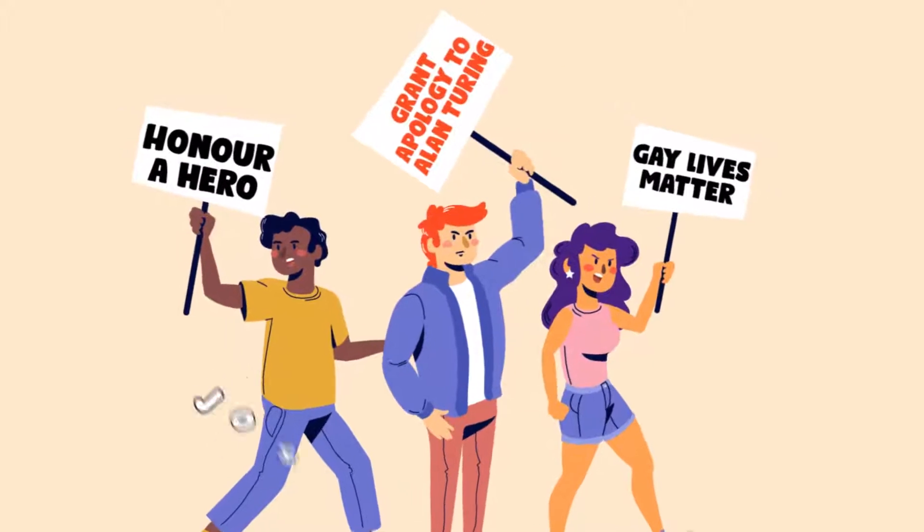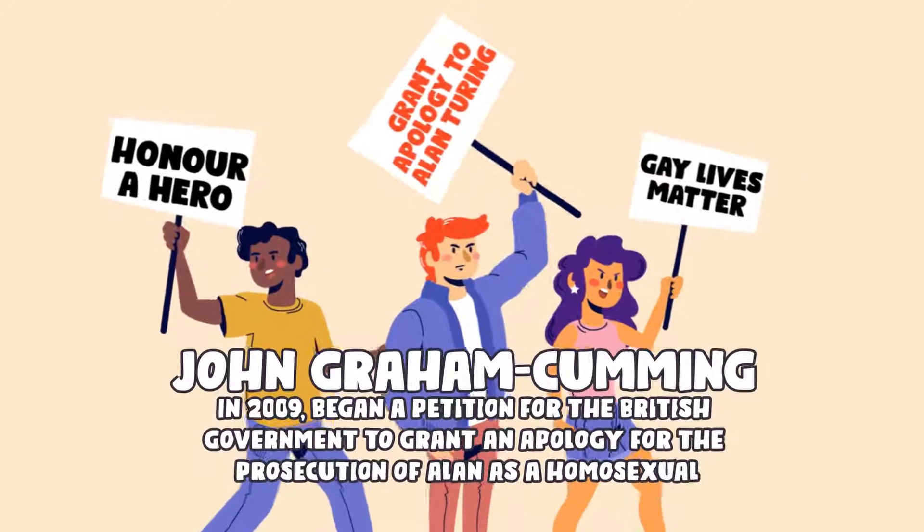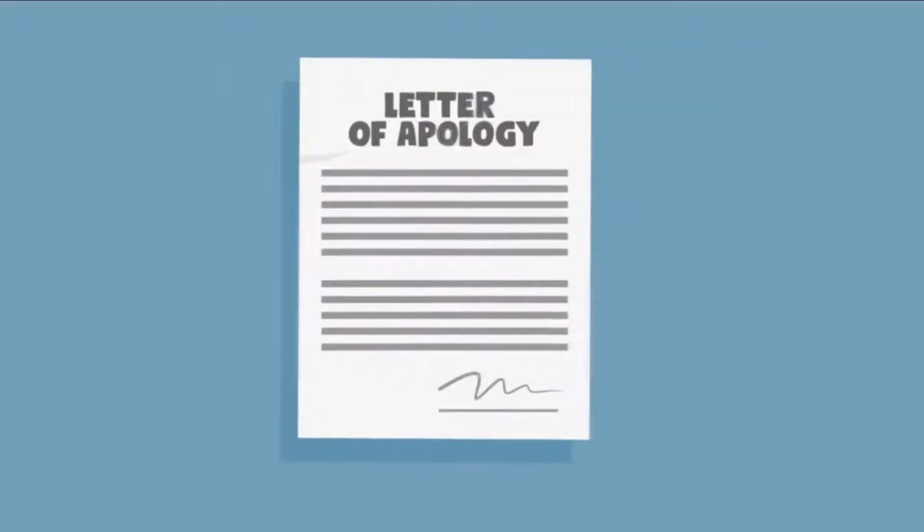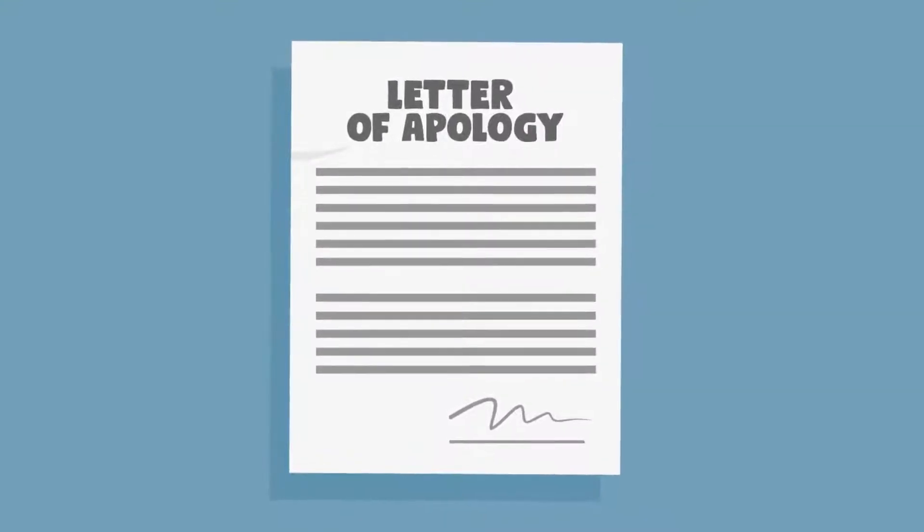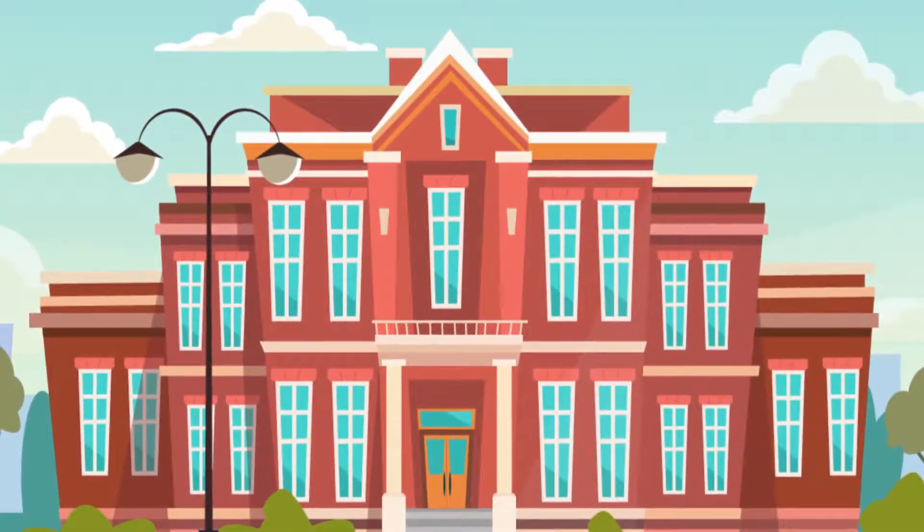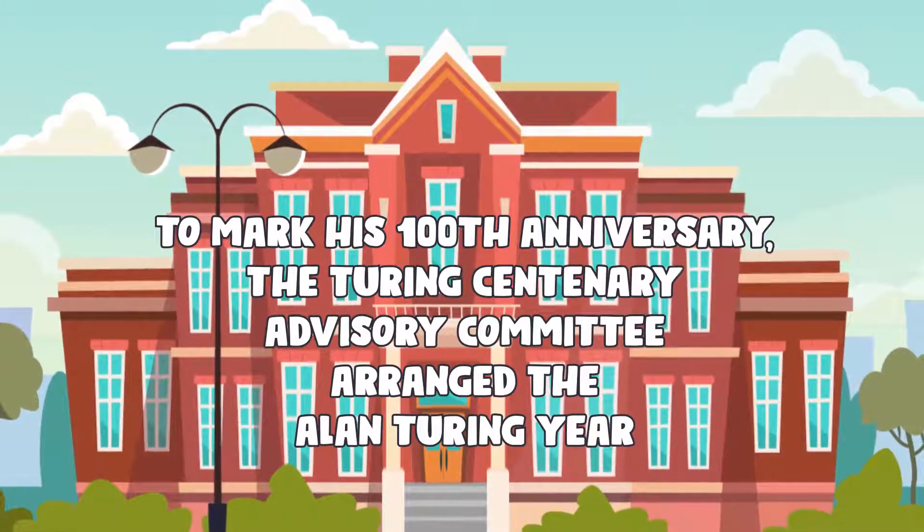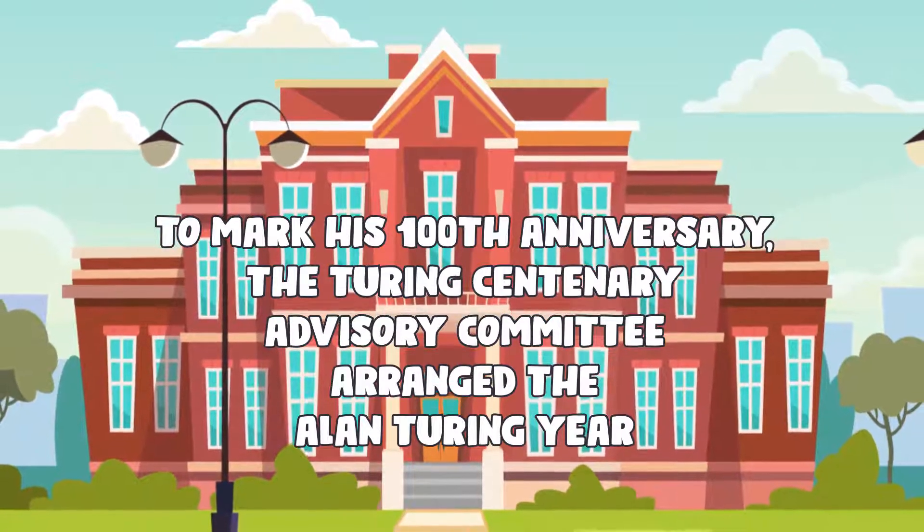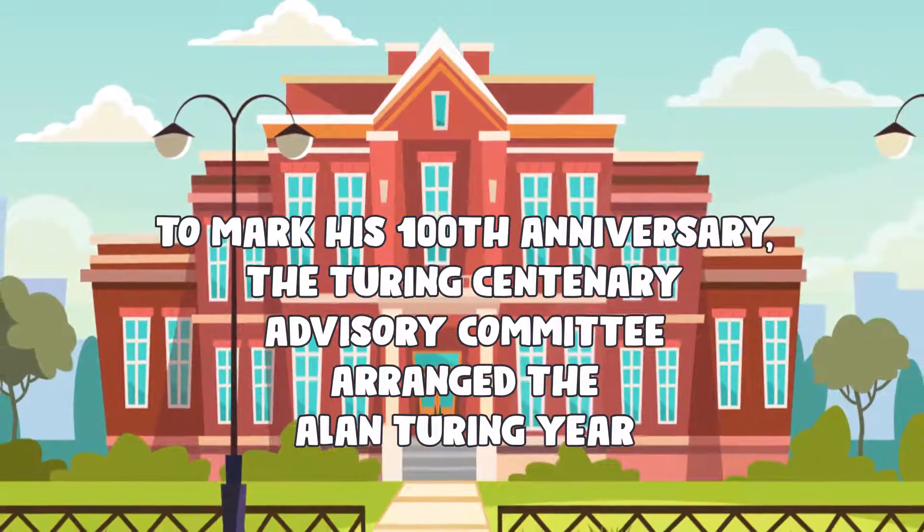The British programmer, John Graham-Cumming, in 2009, began a petition for the British government to grant an apology for the persecution of Alan as a homosexual. Gordon Brown, the then Prime Minister, released an apology letter in the year for Alan's appalling treatment. Alan Turing received several honors in Manchester and other cities, and to mark his 100th anniversary, the Turing Centenary Advisory Committee arranged the Alan Turing Year with events lined up for the year around the world in honor of his works and life achievements.